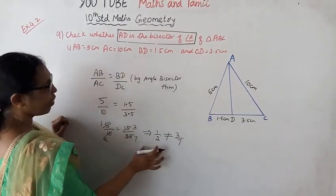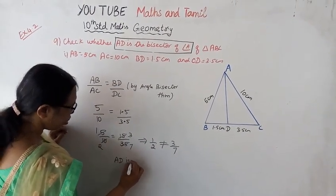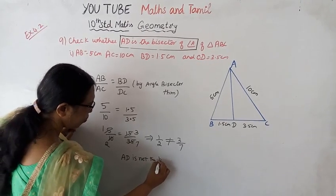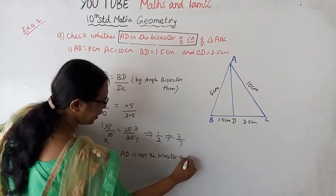Since these ratios are not equal, AD is not the bisector of angle A.